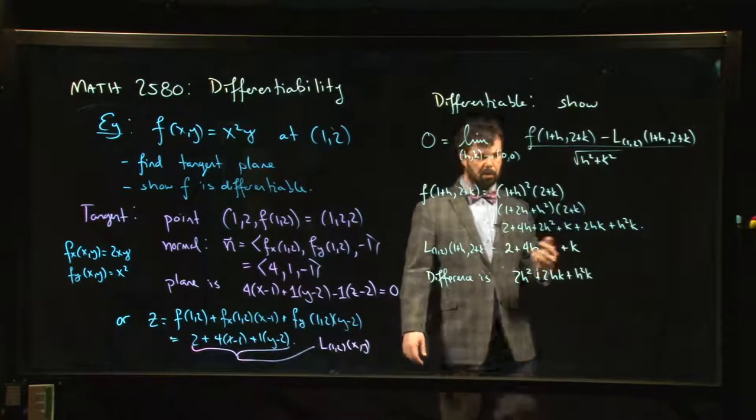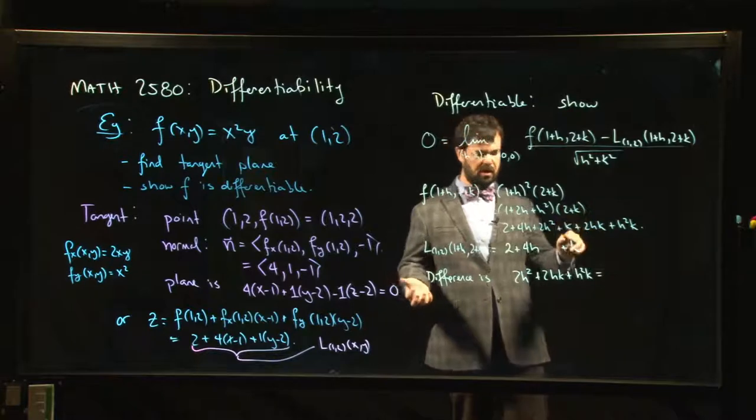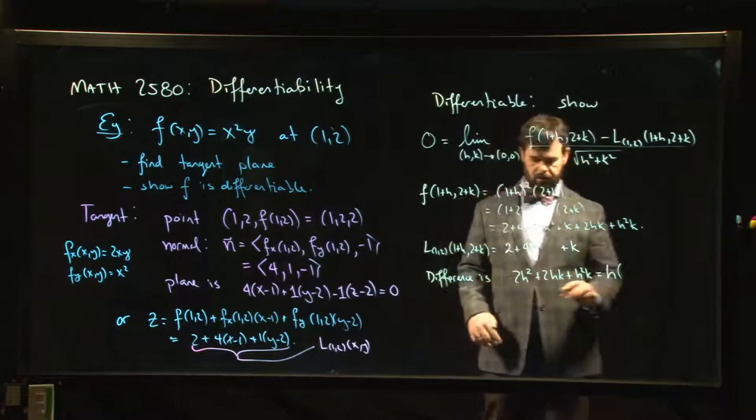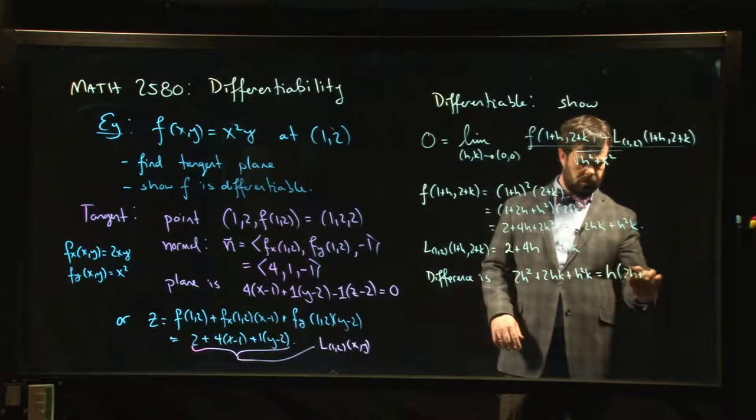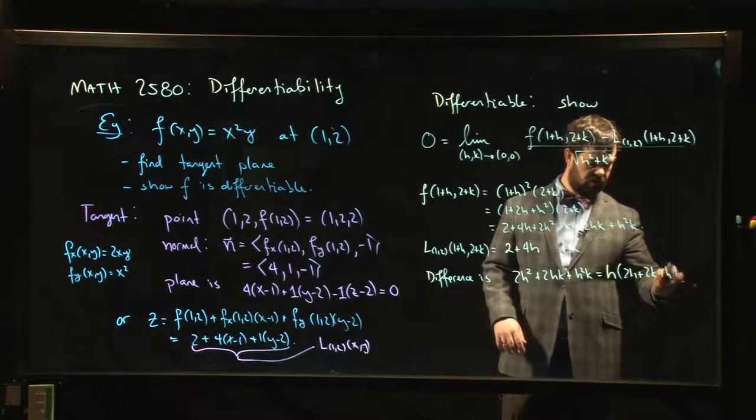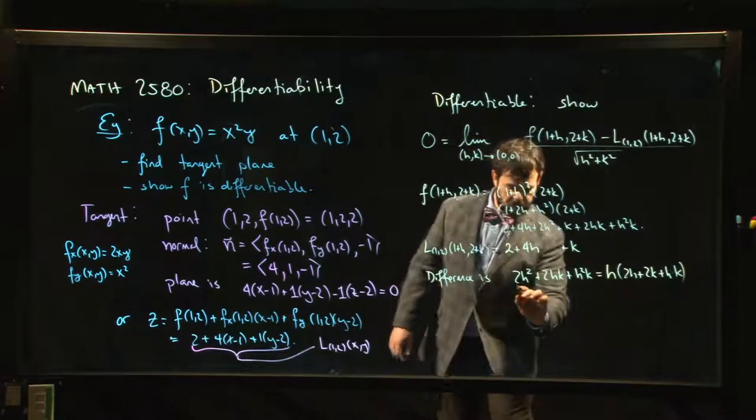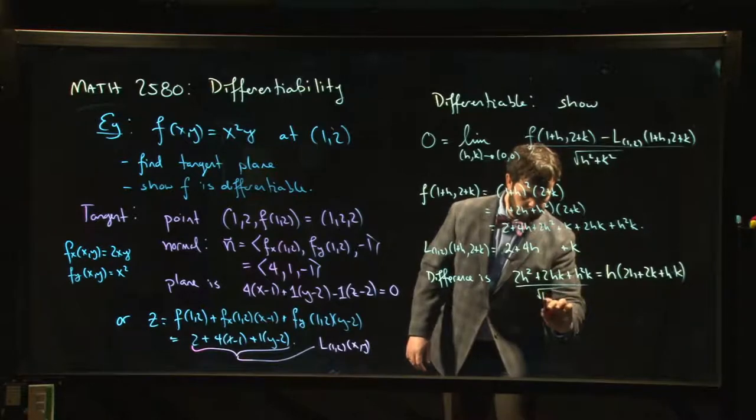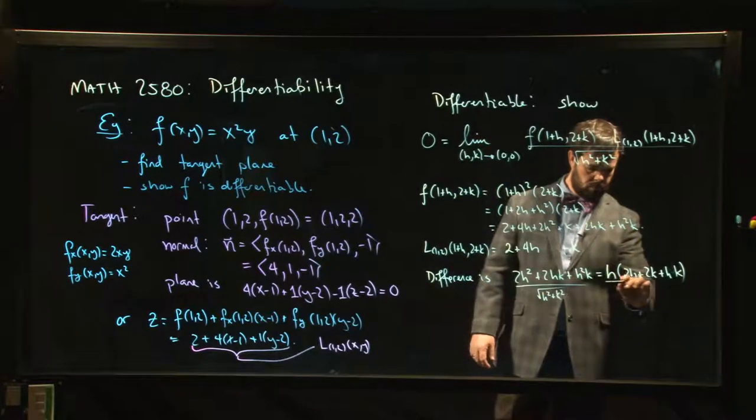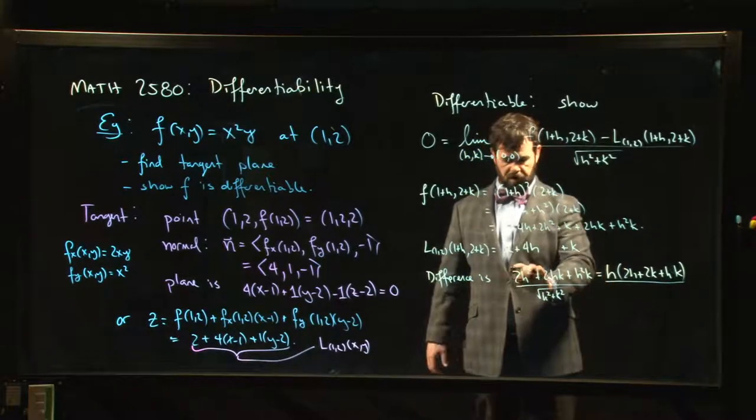And there are a number of ways that you could tackle this, but one way you might think of this, and again, I just want to give you the idea of how this works. I won't ask you to do one of these proofs of differentiability because they get messy in a hurry. But I can factor out an h, leaving me with 2h plus 2k plus hk.